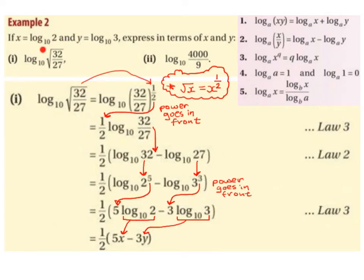If x equals log base 10 of 2 and y equals log base 10 of 3, express in terms of x and y: log base 10 of root(32/27) and log base 10 of 4000/9. Let's start off with log base 10 of root(32/27).